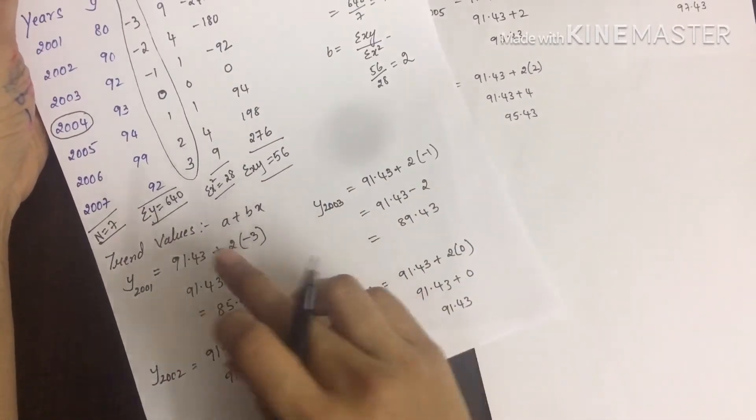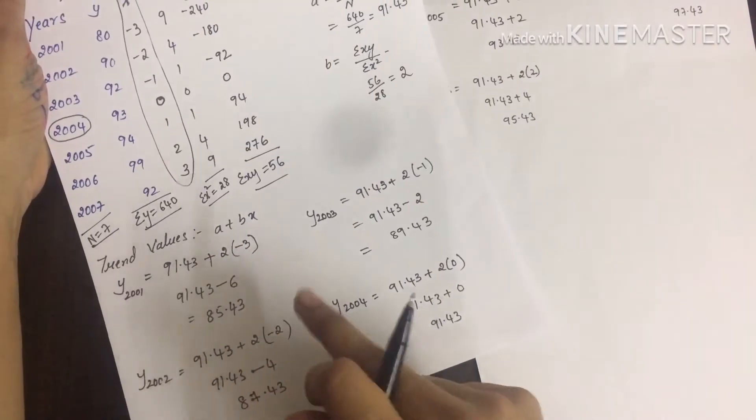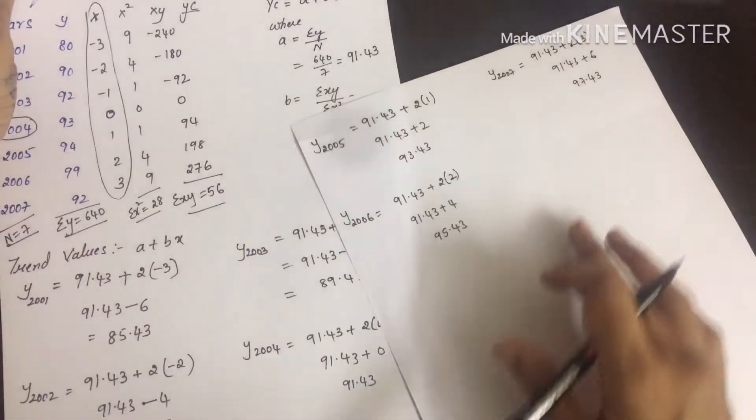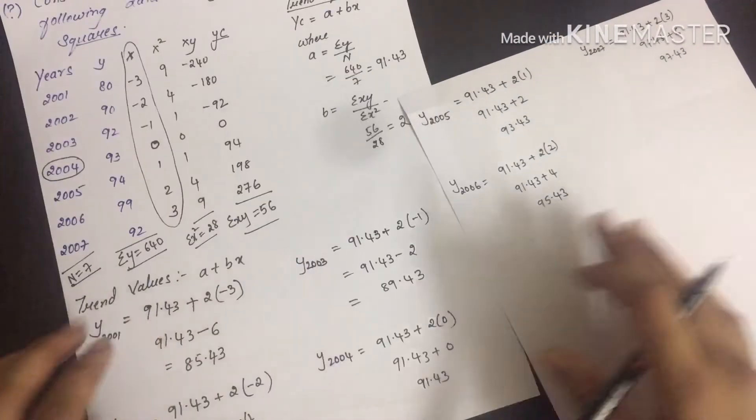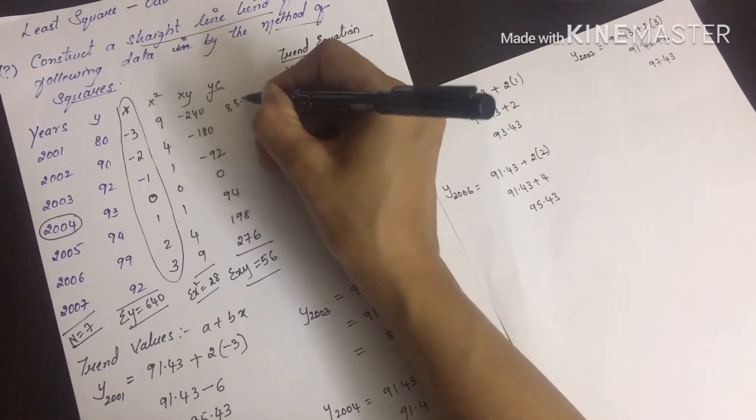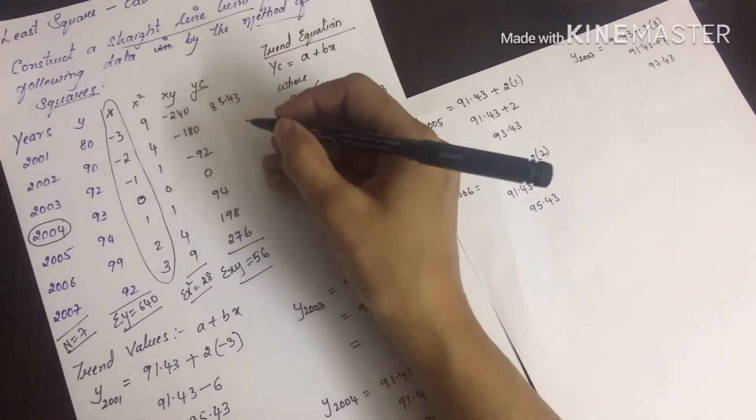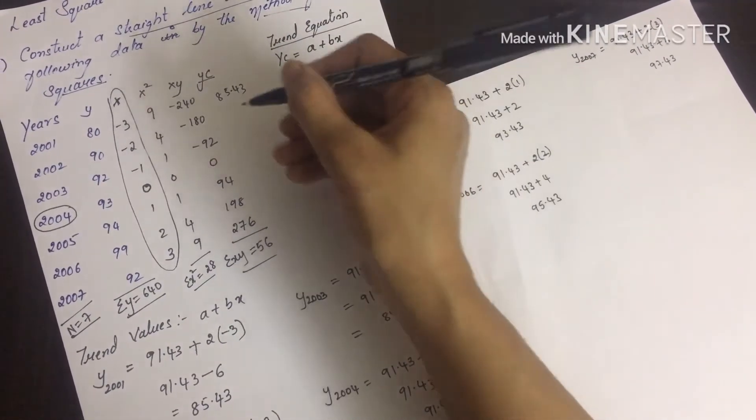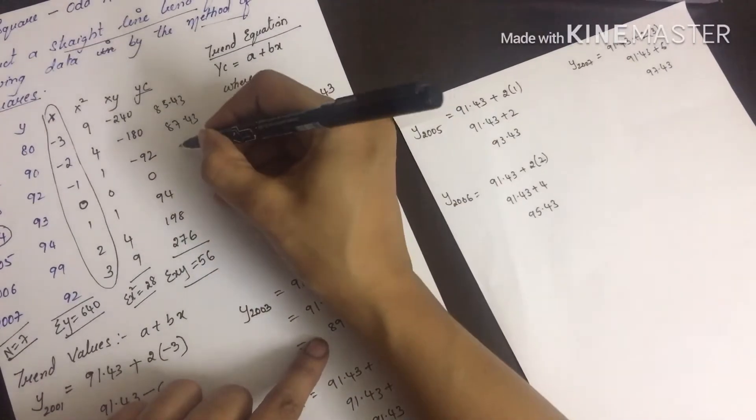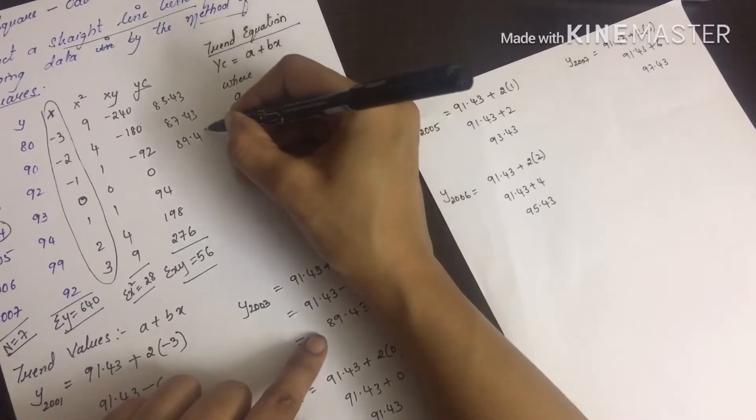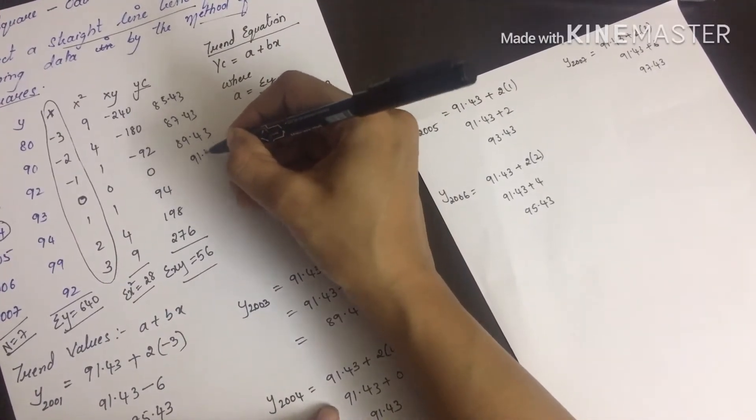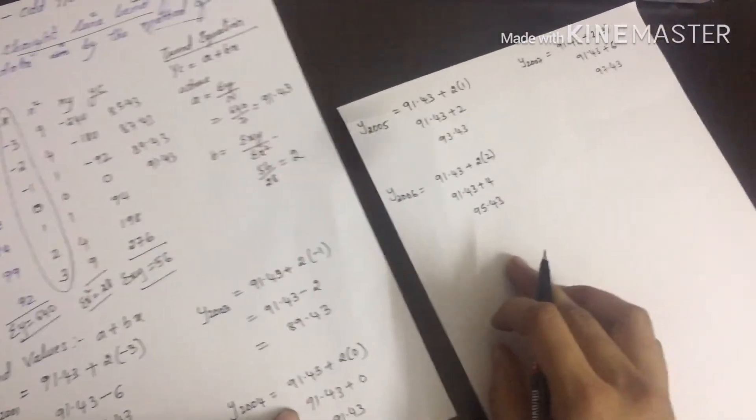Similarly you can calculate all the trend values till 2007. We get: 2001 is 85.43, 2002 is 87.43, 2003 is 89.43, 2004 is 91.43, 2005 is 93.43, 2006 is 95.43, and 2007 is 97.43.